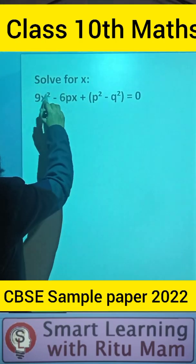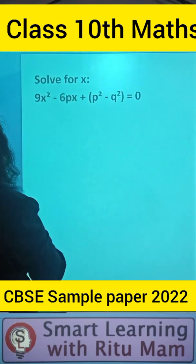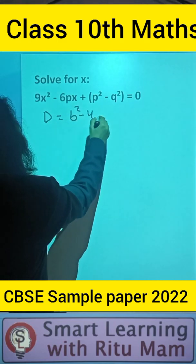Hello smarties, the next question of the sample paper is to find x for this equation. D is b² - 4ac.